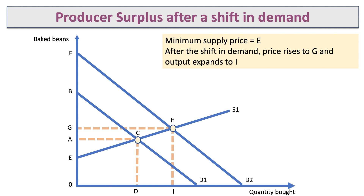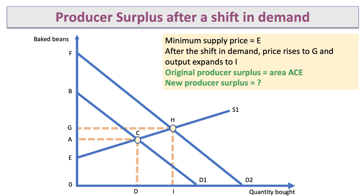Now, what happens if there's a shift in demand? The demand curve has shifted out from D1 to D2, and the price goes up from A to G. Output in equilibrium expands from D to I. We have a new equilibrium at point H, so the producer is now selling more — quantity I — at a higher price G than before.